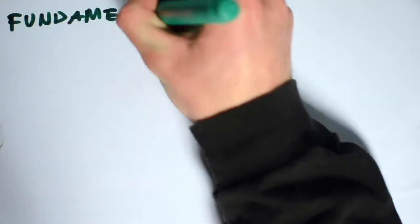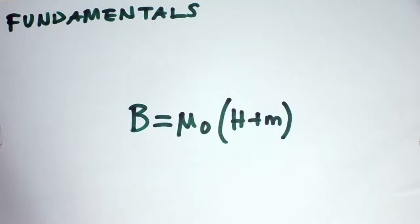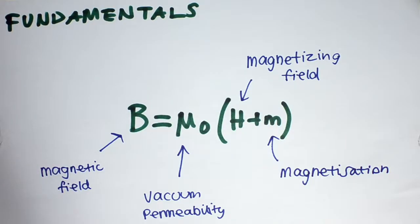Before we go any further, there is a key equation that we need to look at. For many materials, the magnetic field and the magnetising field are related by the following equation: B equals mu nought H plus M. Where H is the magnetising field, M is the magnetisation, B is the magnetic field, and mu nought is the vacuum permeability.